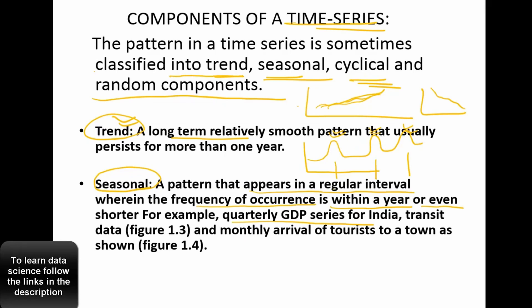So we call that seasonal data, that means it happens only in particular season, and it should repeat within a year or less. If it is happening over more than two years, one year, it's not, I mean, by definition, it's not seasonal.